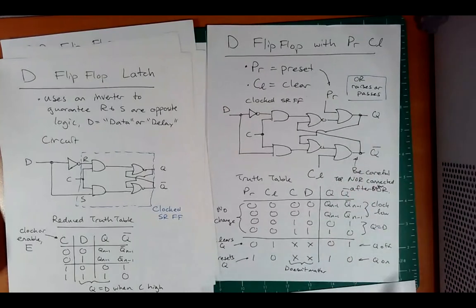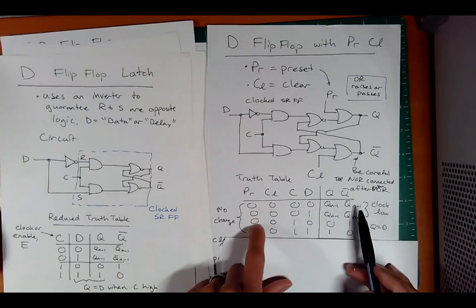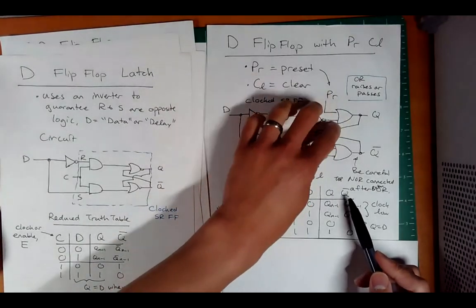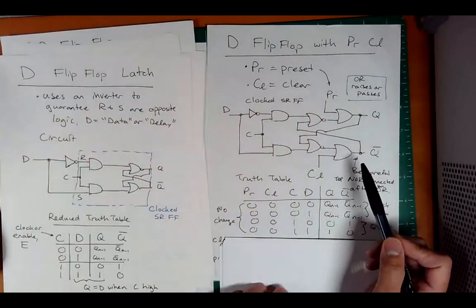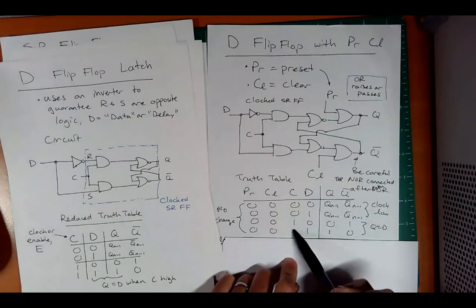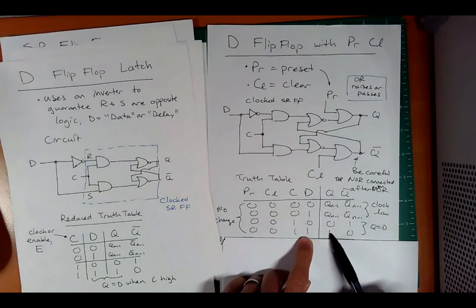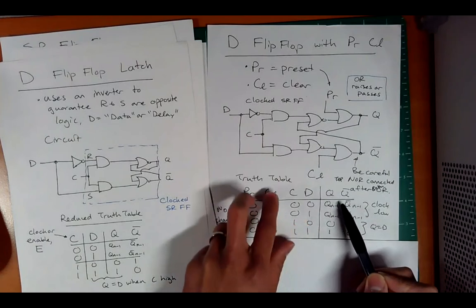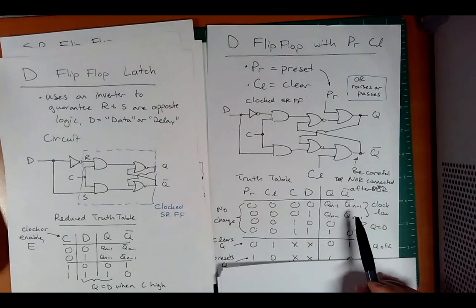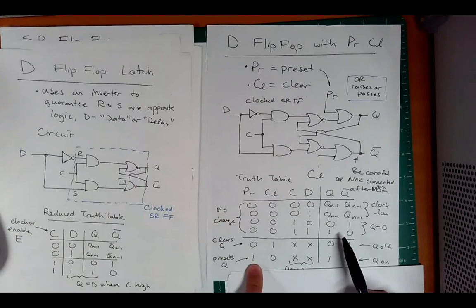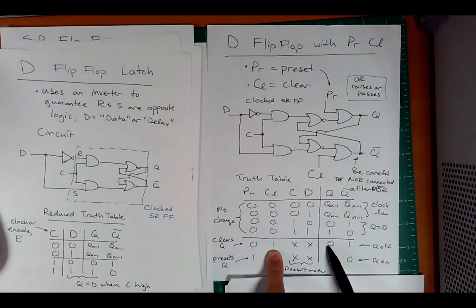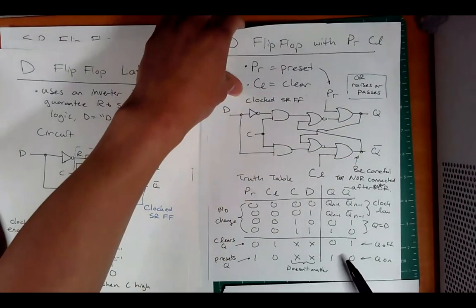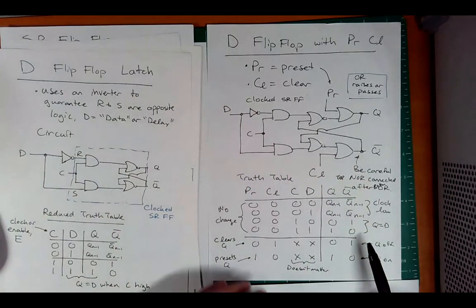The truth table looks a little complicated but it's not too bad. If preset and clear are both low, there's no difference between this version and the basic data flip-flop: clock high with data one means set, clock high with data low means reset, clock zero means holding pattern. If preset is high, you've guaranteed Q is on. If clear is high, you've guaranteed Q is low and Q bar is one. Having both preset and clear as one-one is silly, so that's not a case we really need to consider.